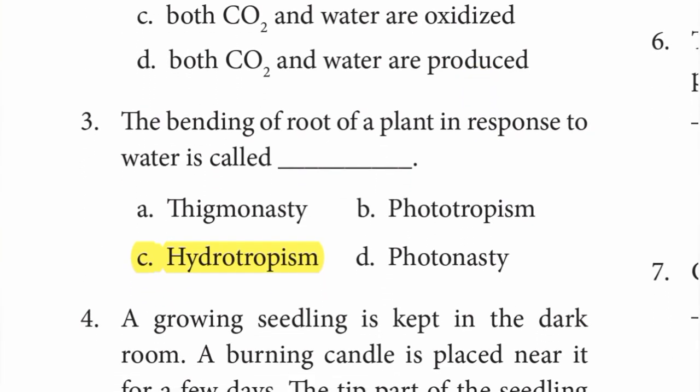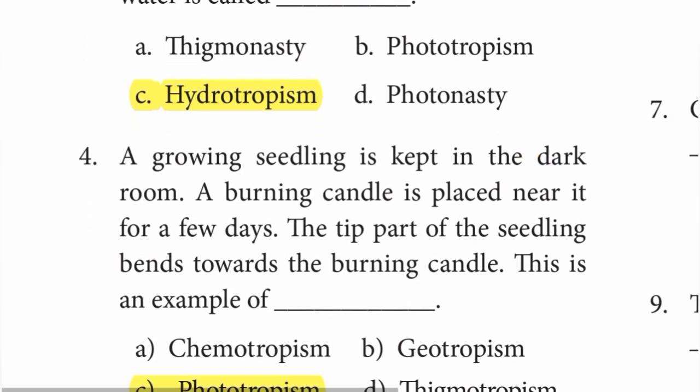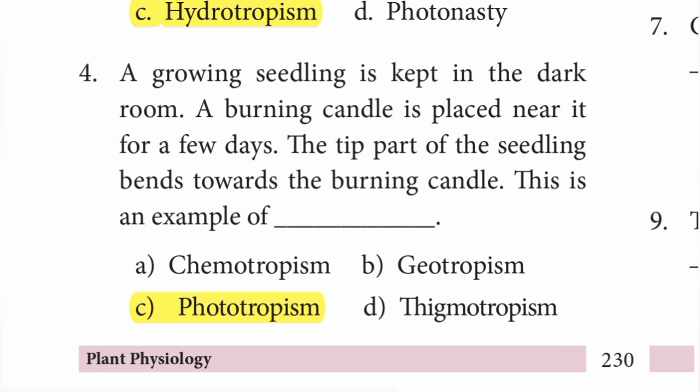Third one: the bending of root of a plant in response to water is called hydrotropism. Option C is the right answer. Number four: a growing seedling is kept in a dark room and a burning candle is placed near it for a few days. The tip of the seedling bends towards the burning candle. This is an example of phototropism. Option C is the right answer.